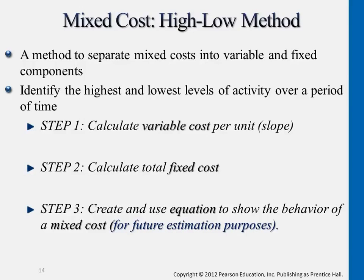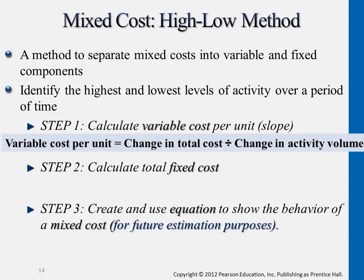When you look at a table of information, like the three months of information earlier, first of all calculate the slope. The slope comes from differences in x-axis and differences in y. So earlier we talked about 20 minus 15, and then 300 minus 225. This gives us the idea from variable costs — that basically is step one: calculate variable costs per unit because mixed costs has a portion of variable and a portion of fixed.